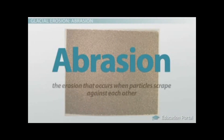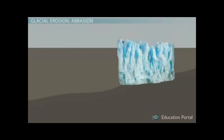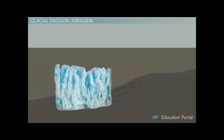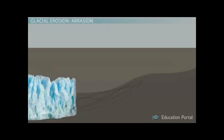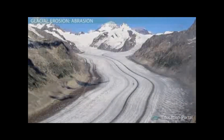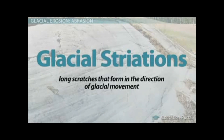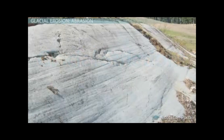Abrasion is defined as the erosion that occurs when particles scrape against each other. The enormous weight of the glacier, along with the rocks and sediment plucked up and clinging to its belly, scratch and carve the rock surface below. It's almost as if the moving glacier is sanding the rocks with abrasive sandpaper. As the glacier sands the rock, it leaves behind long scratches that form in the direction of the glacial movement, called glacial striations. Seeing these scratch marks is a sure sign that a glacier once covered the land.